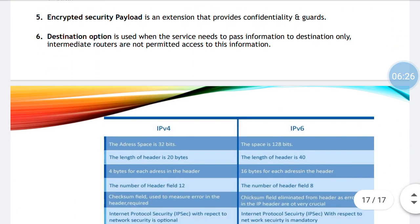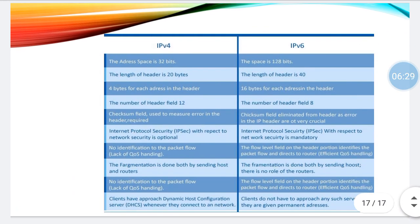Finally, coming to the last part of second chapter. Chapter two comprises three videos and this is the third and last video. Difference between IPv4 and IPv6 — a very important question. You should remember five to six points. The address space for IPv4 is 32 bits and for IPv6 it is 128 bits. The length of header is 20 bytes in IPv4, but 40 bytes in IPv6.